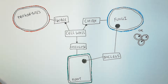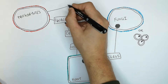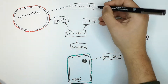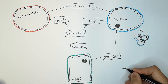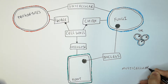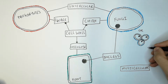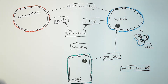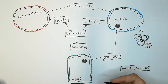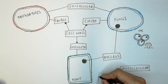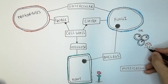Prokaryotes and fungi can both exist as unicellular organisms — single-celled organisms. However, fungi and plants can both exist as multicellular organisms. Fungi can exist as mushrooms, which are a multicellular fungi, and plants are obviously multicellular. You do not get single-celled plants.